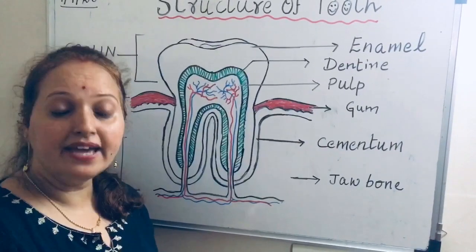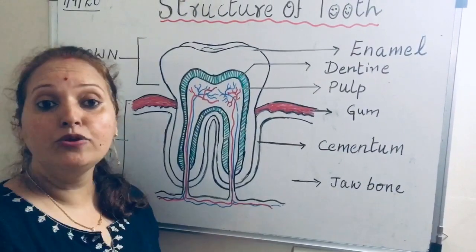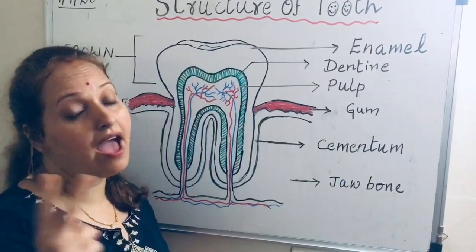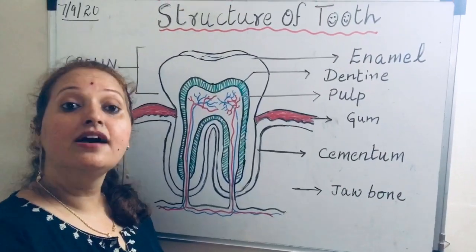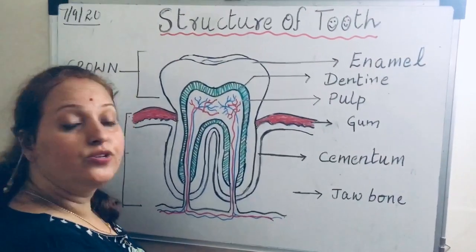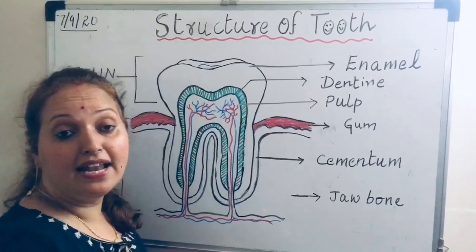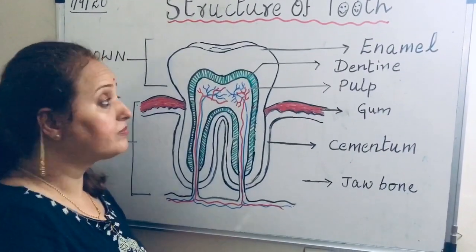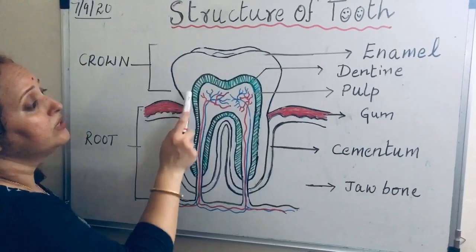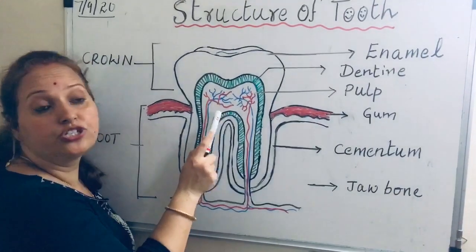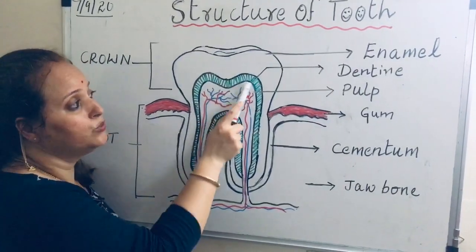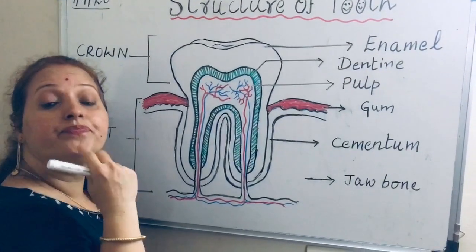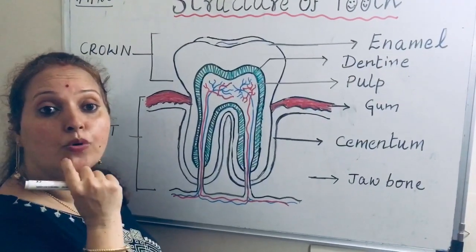The teeth in a human being are of two sets. The first set of teeth are called milk teeth, and later they are replaced by permanent teeth. Now let us begin with today's topic, that is the structure of a tooth. Every tooth is fixed in our jaw bone.